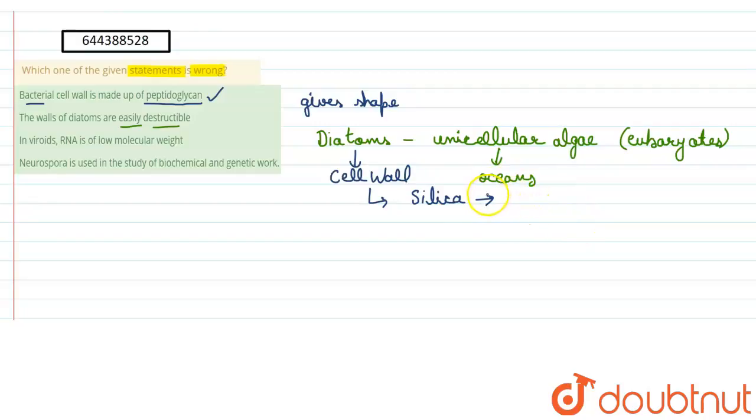That is, it is hard in structure and therefore these are not easily destroyed. So the statement becomes wrong. The statement is saying that the diatoms are easily destructible. But this is wrong due to the presence of or due to the deposition of silica. They are not easily destroyed. So the second statement becomes wrong.